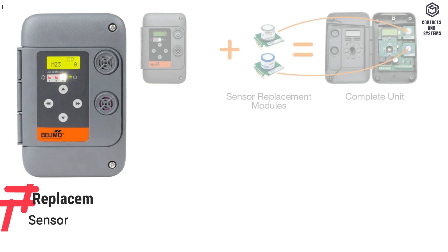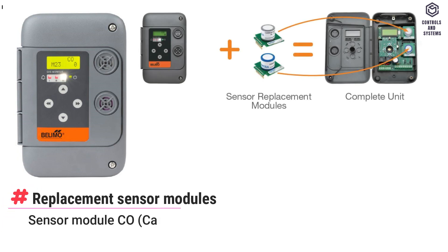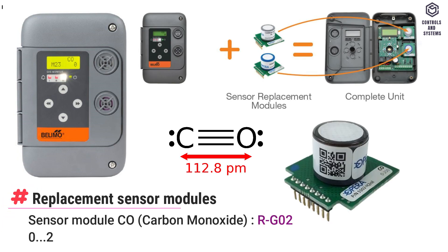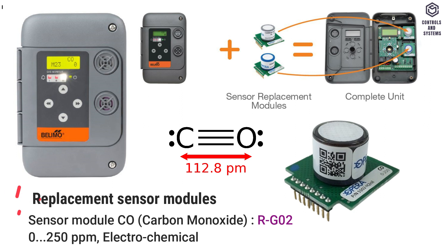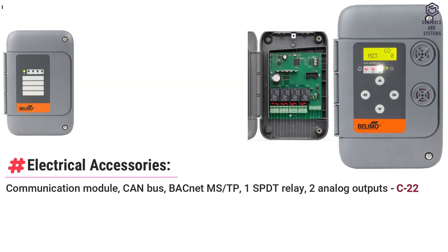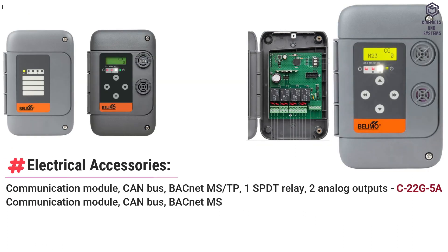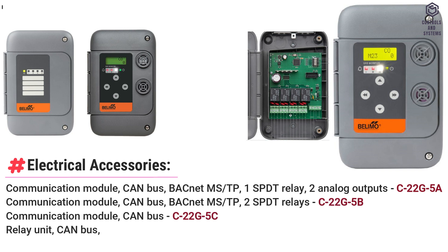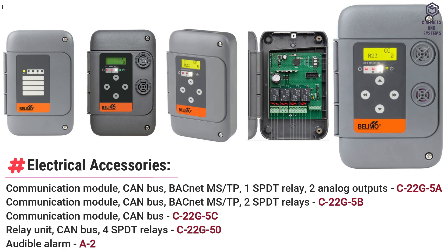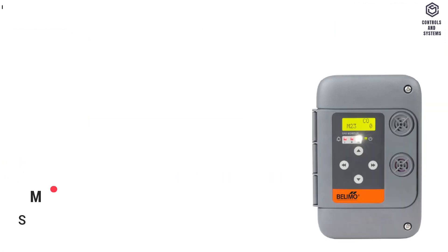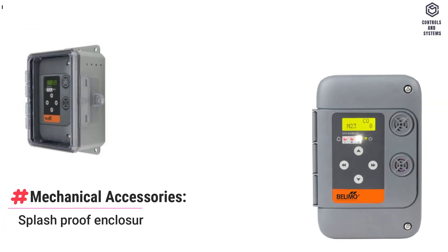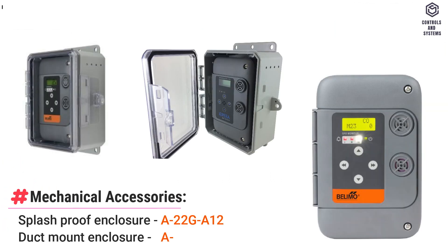Accessories. Replacement sensor modules include a carbon monoxide sensor with range 0 to 250 parts per million. Electrical accessories include a relay unit, communication modules 5A, 5B, 5C, and a high-low mounting kit. Mechanical accessories include a splash-proof enclosure and duct mount enclosure.